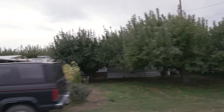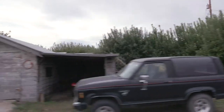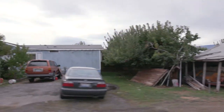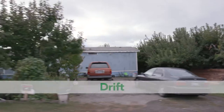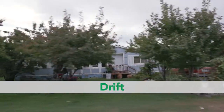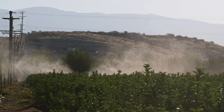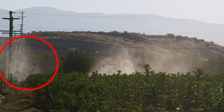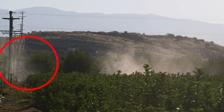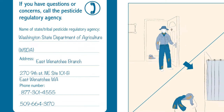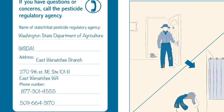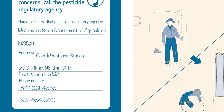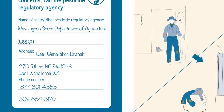If you work or live near areas where pesticides are being used, you can be exposed to pesticides through drift. Drift can happen during a pesticide application when droplets or dust travel away from the target site. Drift is a violation of pesticide law and should be reported to your state or tribal pesticide regulatory agency.